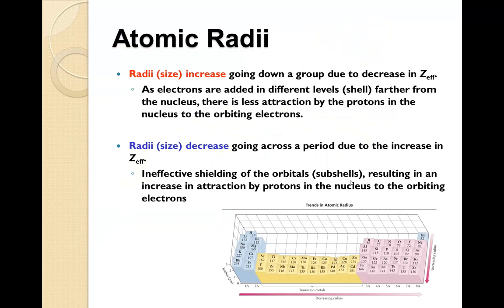So there is a relationship here. The radii, the size increases going down a group due to the Z effective being less. As electrons are added to the different levels or the shells farther from the nucleus, there is less attraction by the protons to the nucleus to the orbiting electrons. The radii size decreases going across the period from left to right because Z effective is increasing. The ineffective shielding of the orbitals resulting in the increase in attraction by protons in the nucleus to the orbiting electrons. So once you get into the upper right hand corner, everything starts getting smaller as you get closer to there.